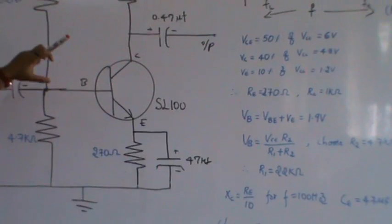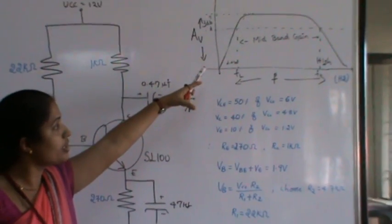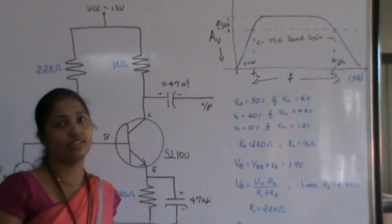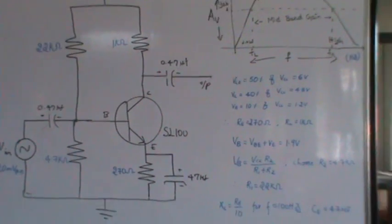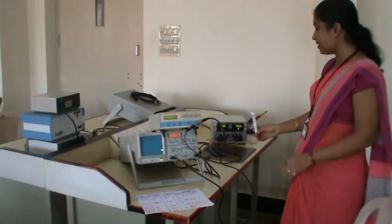And to calculate the coupling capacitor and the bypass capacitor value by knowing the capacitance reactance XC is equal to RE by 10 for frequency is equal to 100 hertz. CE is 47 micro farad and the coupling capacitors are 0.47 micro farad. So it is connected in the circuit. Once from the circuit the frequency response curve is drawn and from that the mid band gain is calculated. Let us see the circuit here. Here the circuit is wired up as per the circuit diagram.